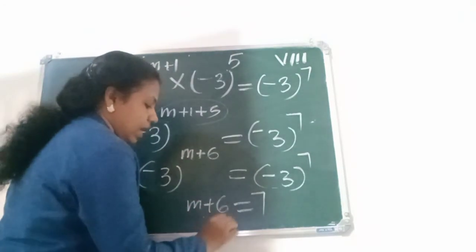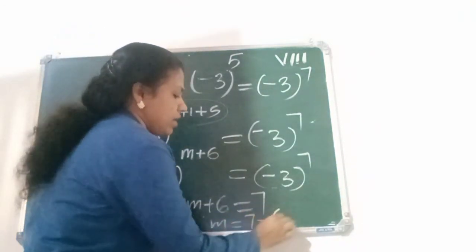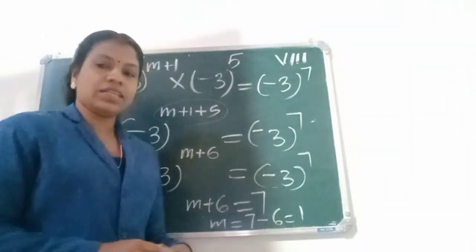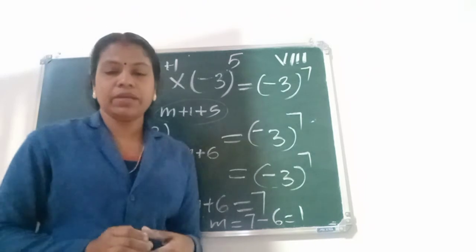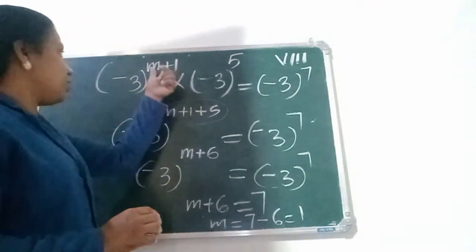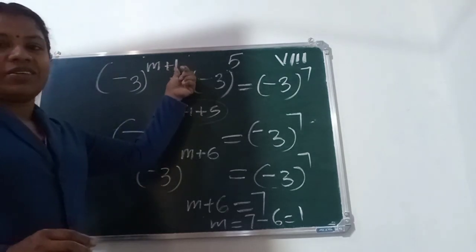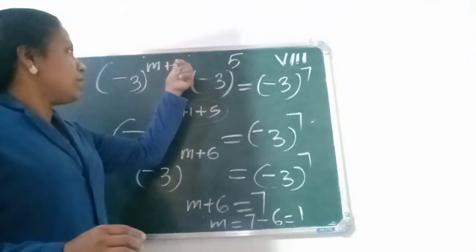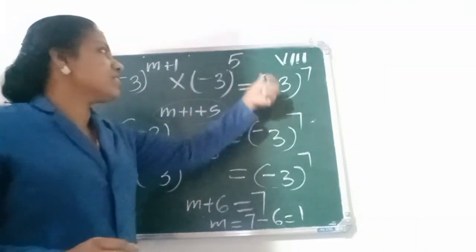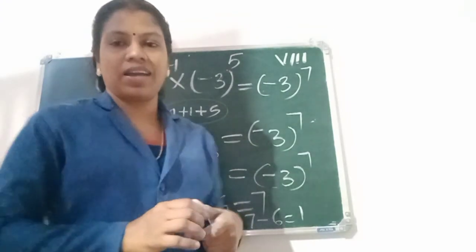Therefore M equals 7 minus 6 equals 1. So the value of M is 1. Verification: putting M equals 1 gives power 1 plus 1 equals 2, and 2 plus 5 equals 7. LHS equals RHS. Correct answer.